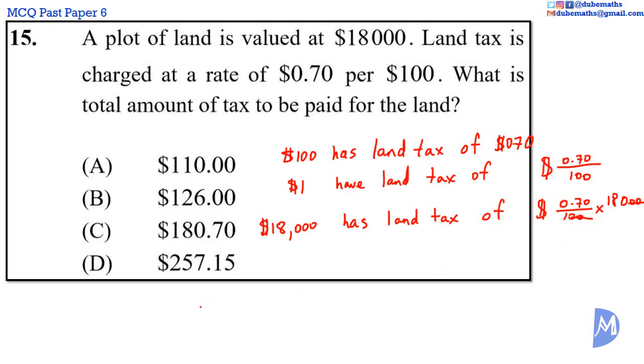180 multiplied by 0.7. We ignore the decimal point for a while. 180 multiplied by 7. 0 times 7 is 0. 8 times 7 is 56. 1 times 7 is 7. 7 added to 5 equals 12. 180 multiplied by 0.7 has one decimal place, so the answer has one decimal place.